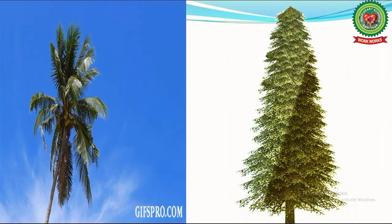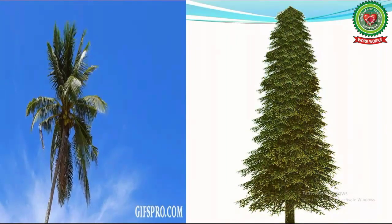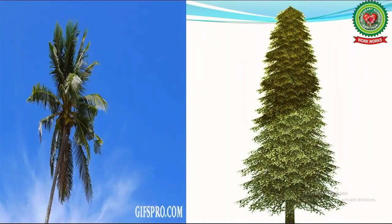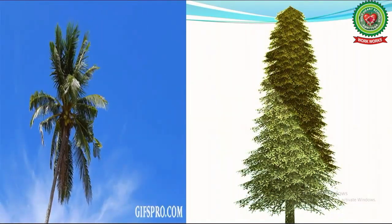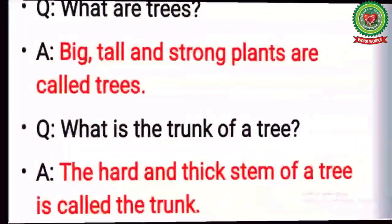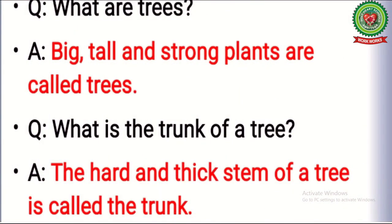We get coconut from the coconut tree. Now let us discuss some questions of this chapter. What are trees? Big, tall and strong plants are called trees. What is the trunk of a tree? The hard and thick stem of a tree is called the trunk.